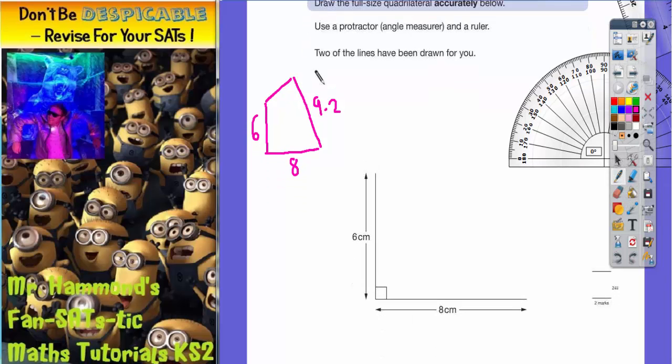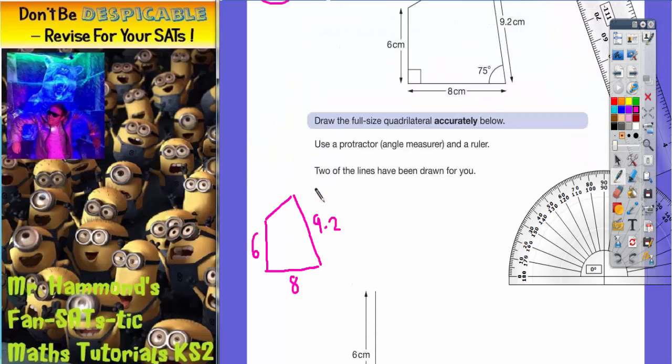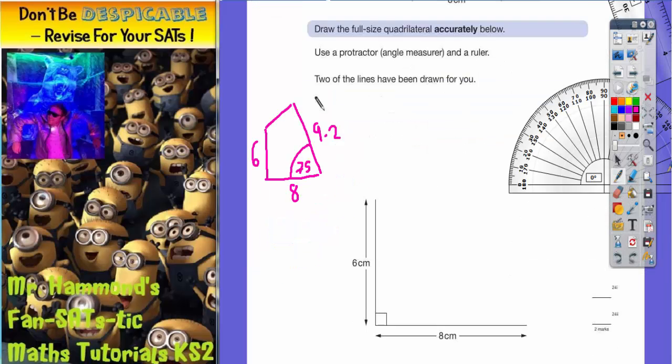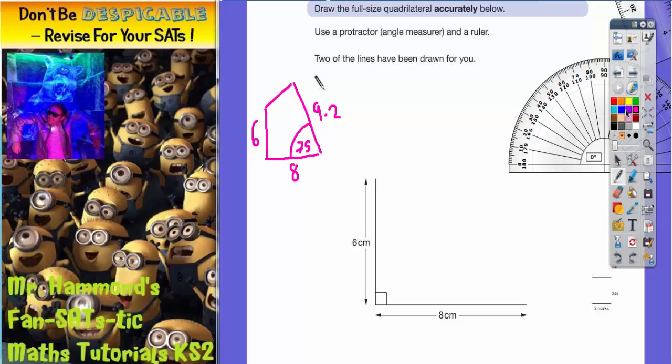Now let's scroll down. I've forgotten to put the 75 degrees on—so that's there. I've already got my 6cm and 8cm lines drawn, so if I can do the 75 degrees and the 9.2cm, I'll be able to complete the shape.